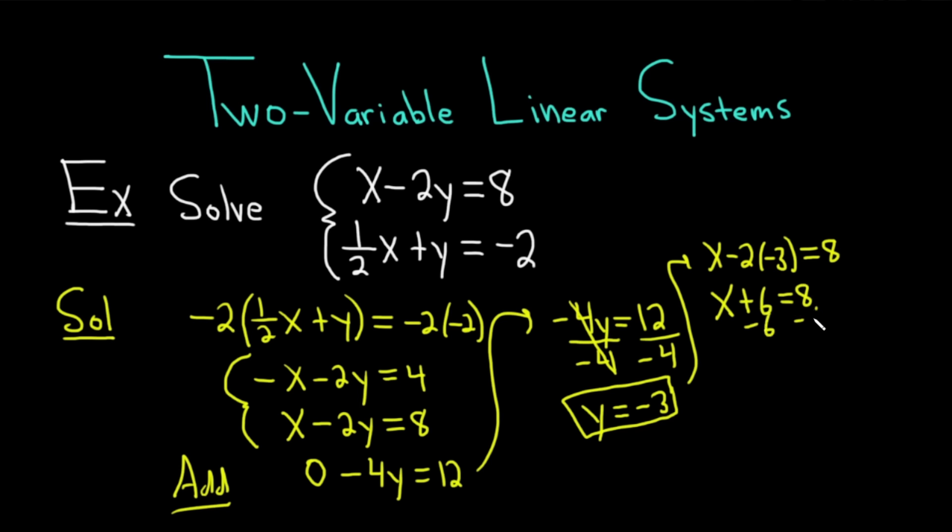And you can subtract 6 from both sides. You get x equals 2. So there's our answer. x equals 2 and y equals negative 3.